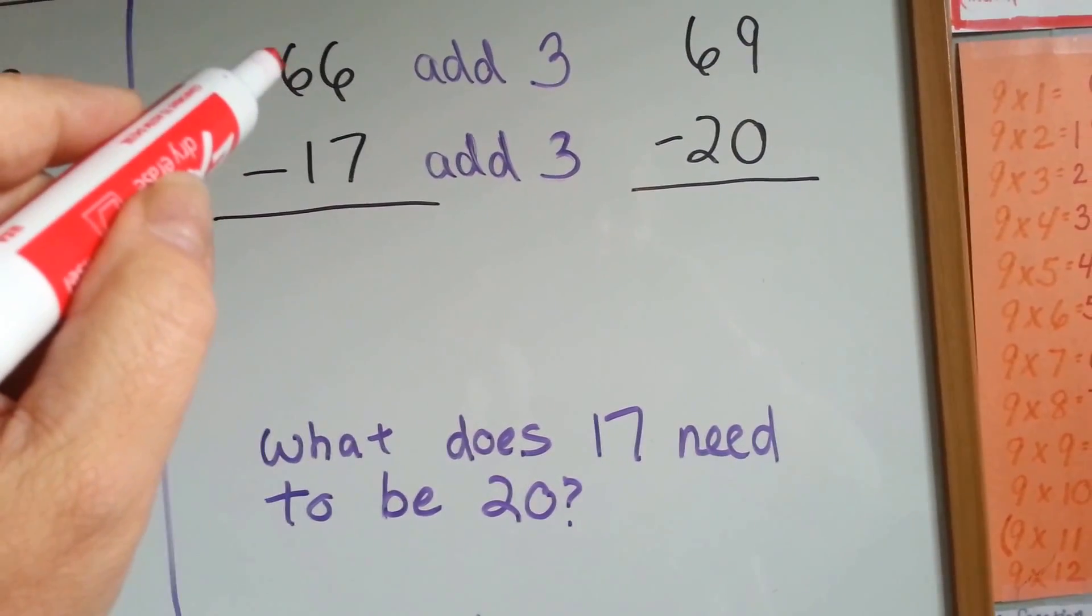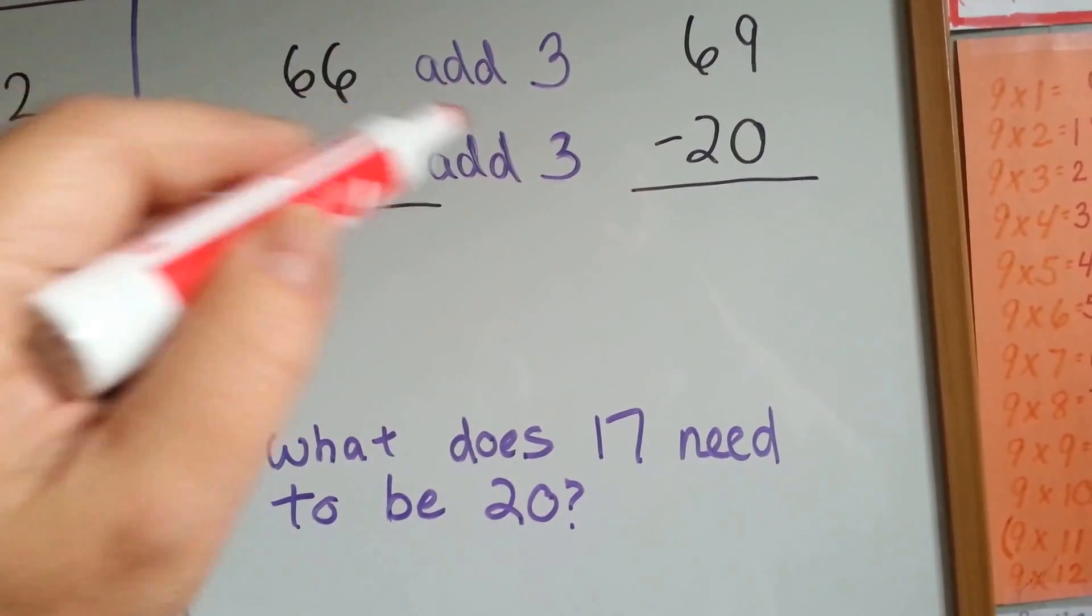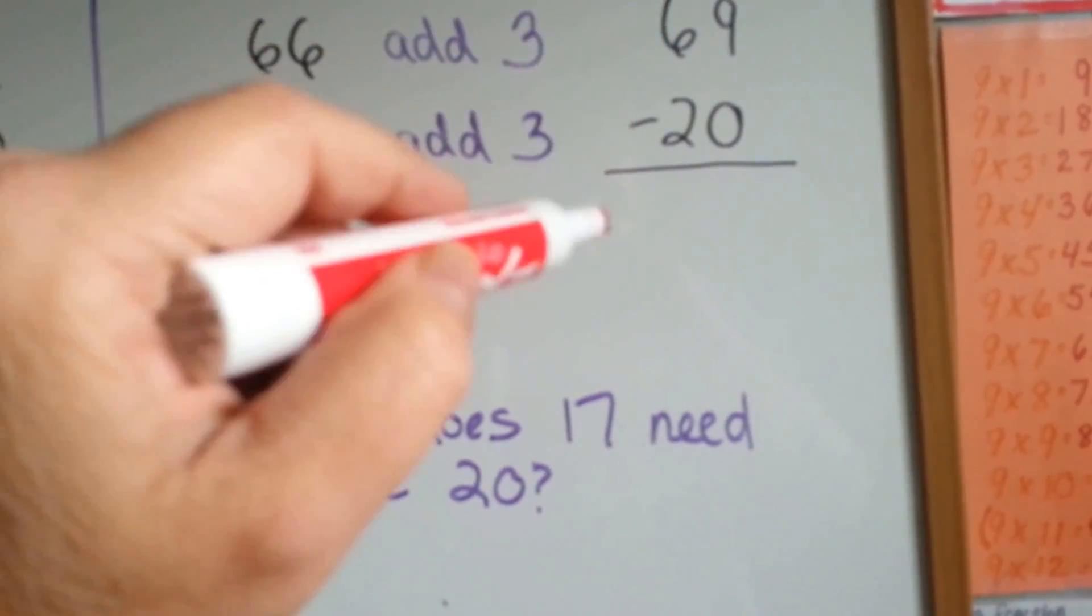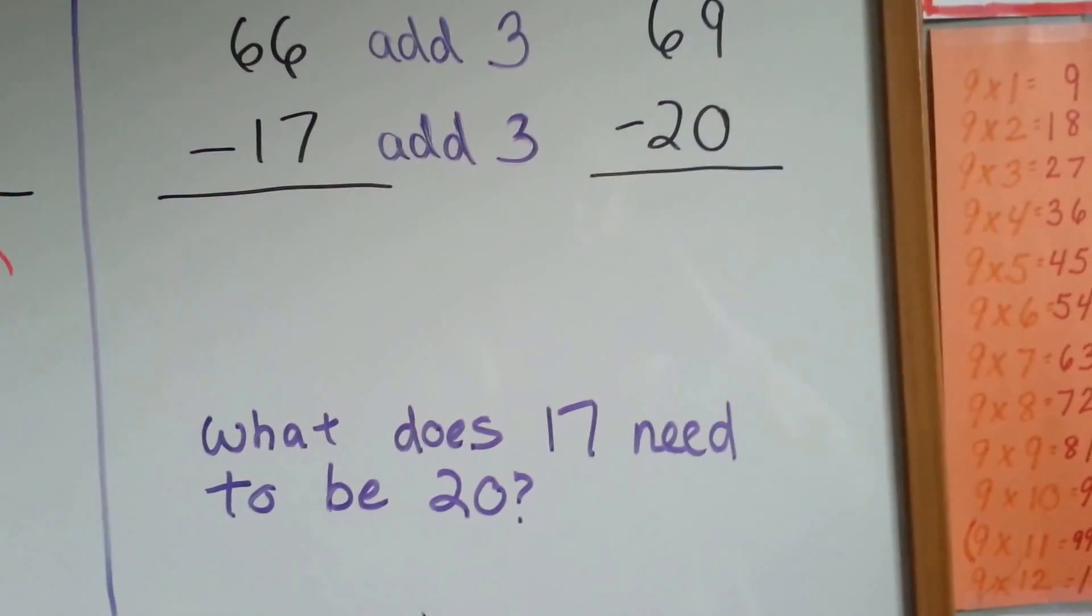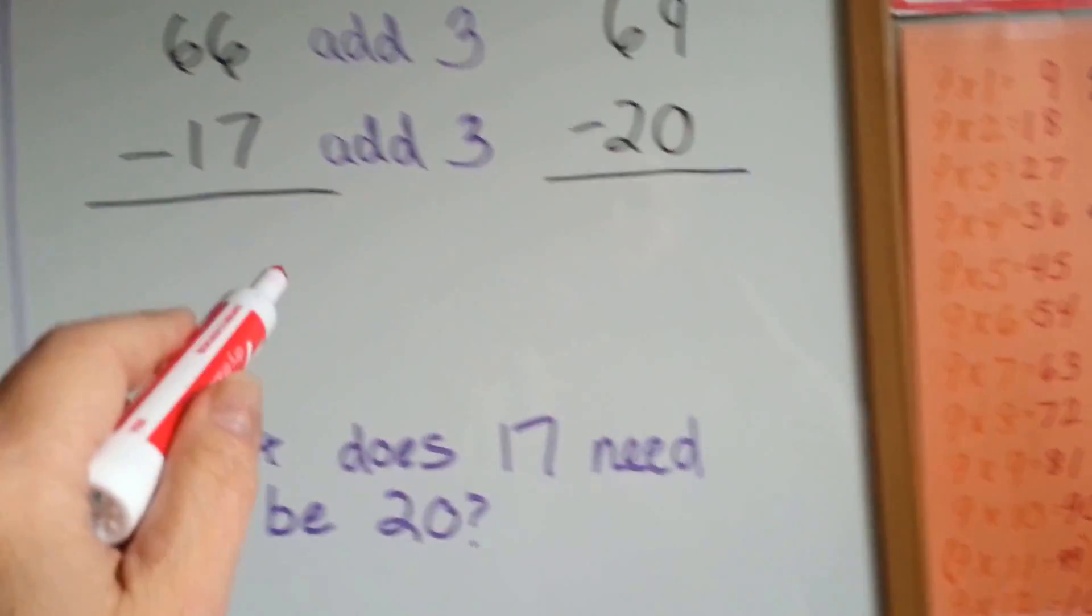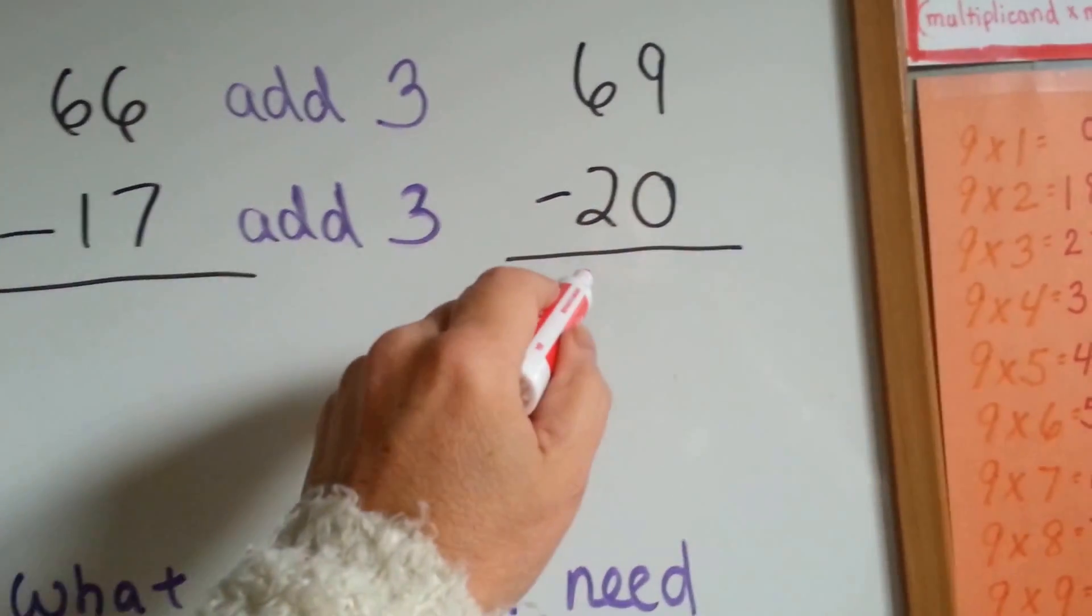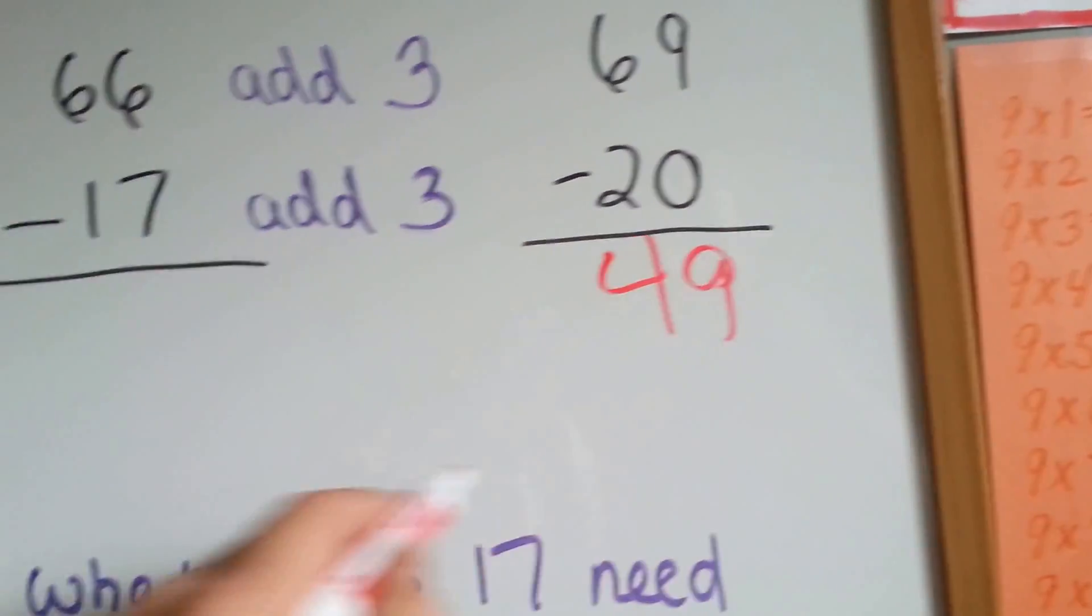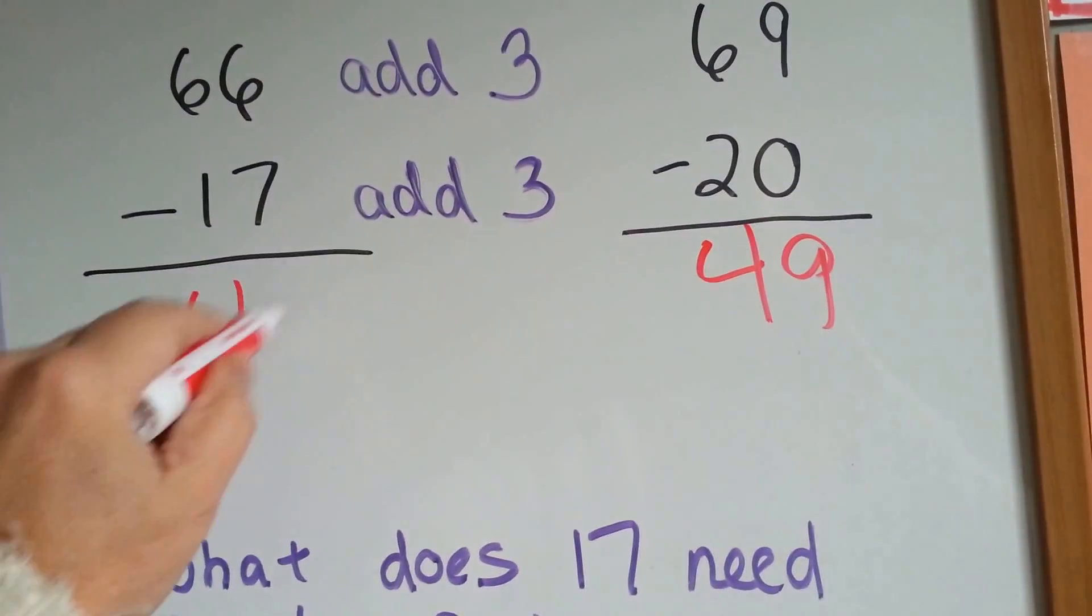The 66 wants 3 also. He becomes a 69. Now you have 69 minus 20. That's a lot easier to subtract than the borrowing one. 69 minus 20 is 49. So guess what? That means this one's 49 also.